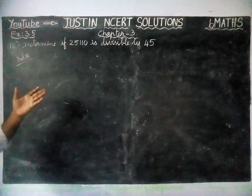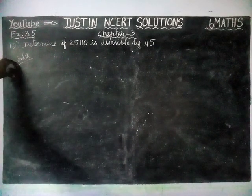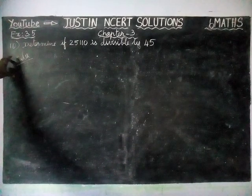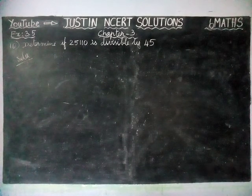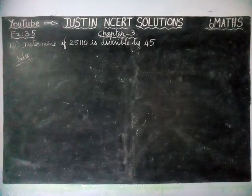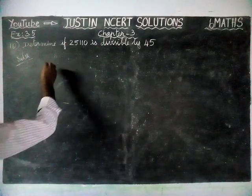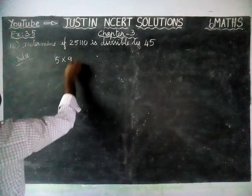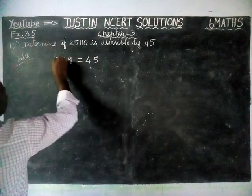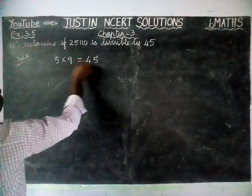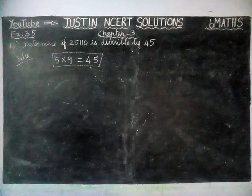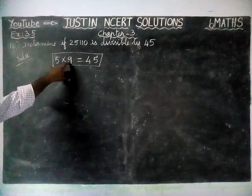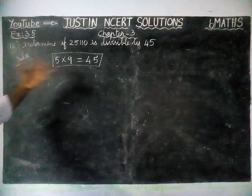In the divisibility rule, we saw up to divisibility of 11, but we did not check it for 45. There is a hint given in this question: 5 and 9 are co-prime numbers. Test the divisibility of the number by 5 and 9. Since 5 multiplied by 9 equals 45, and 5 and 9 are co-prime numbers, we can proceed with this approach.